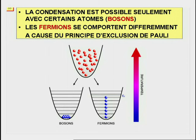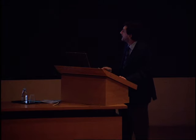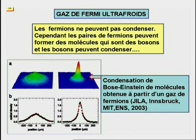Les différences entre les bosons et les fermions apparaissent clairement quand on baisse la température et on peuple les états les plus bas en énergie du système. Les fermions ne peuvent pas donner lieu à la condensation de Bose-Einstein. Cependant, les paires de fermions peuvent former des molécules qui sont des bosons à cause des règles d'addition des moments cinétiques prévues par la mécanique quantique. Et ces bosons peuvent condenser.